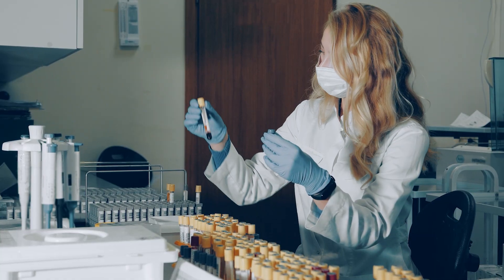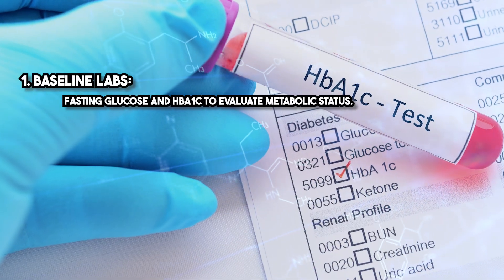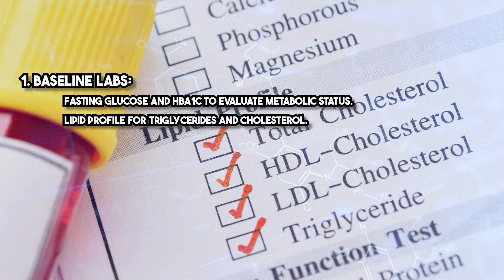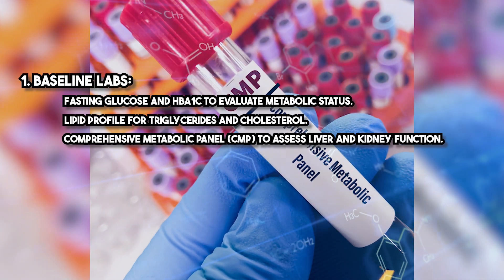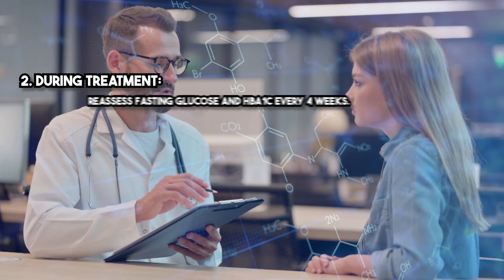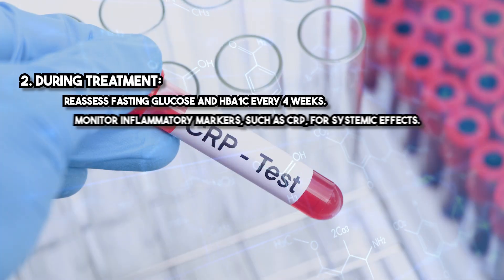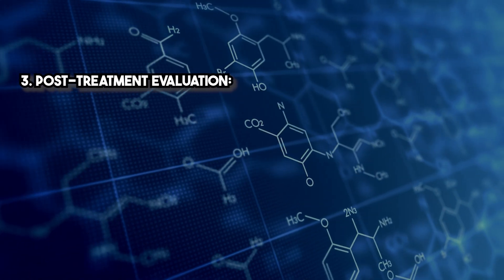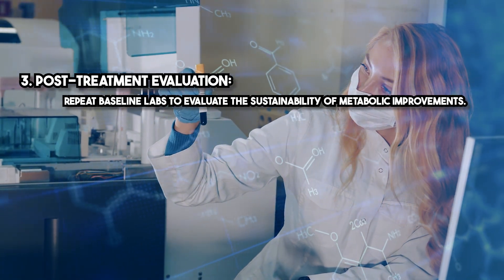Laboratory monitoring is crucial for optimizing therapy and ensuring safety. Baseline labs include fasting glucose and HbA1c to evaluate metabolic status, a lipid profile for triglycerides and cholesterol, and a comprehensive metabolic panel (CMP) to assess liver and kidney function. During treatment, reassess fasting glucose and HbA1c every four weeks and monitor inflammatory markers such as CRP for systemic effects. Post-treatment evaluation should repeat baseline labs to assess the sustainability of metabolic improvements.